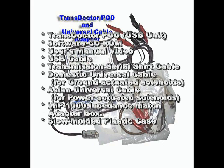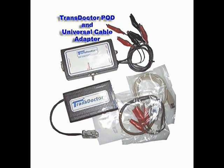The transductor is composed of the unit pod itself, software CD-ROM, user's manual, video, USB cable, transmission serial shift cable, domestic universal cable which is used for ground-actuated solenoids, Asian universal cable which is used for power-actuated solenoids, the IM page 1000 and P-Dance match adapter box, and a proper blow-molded case.